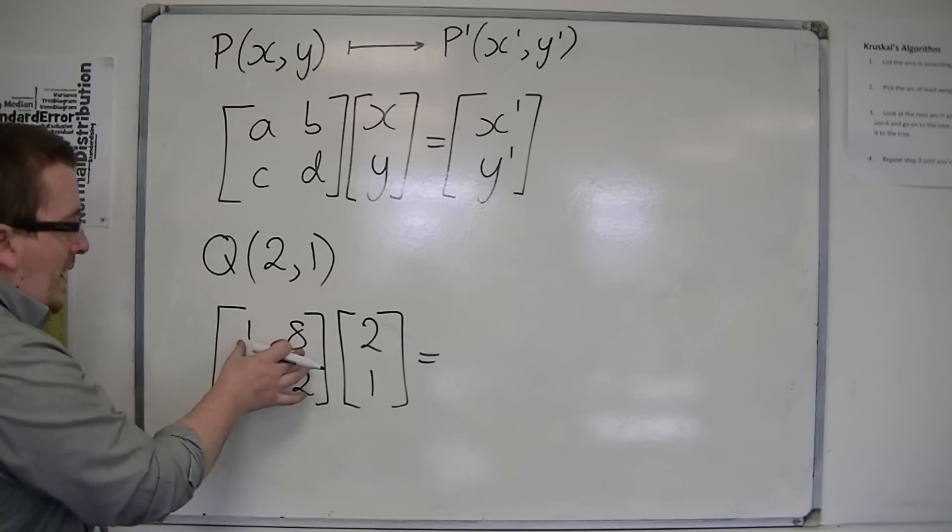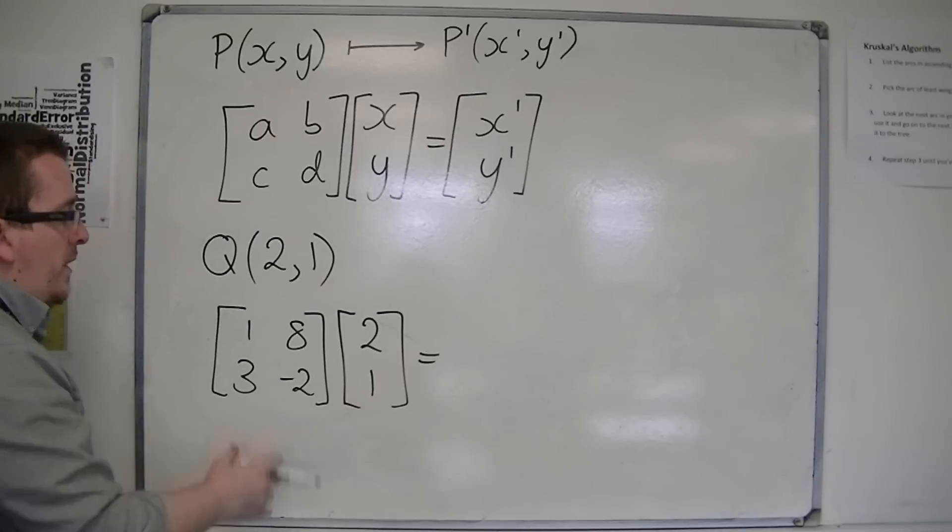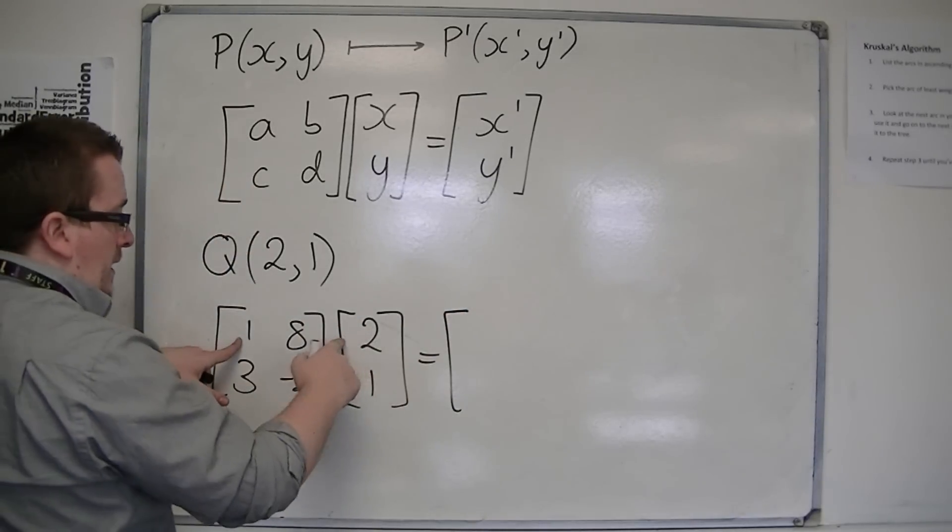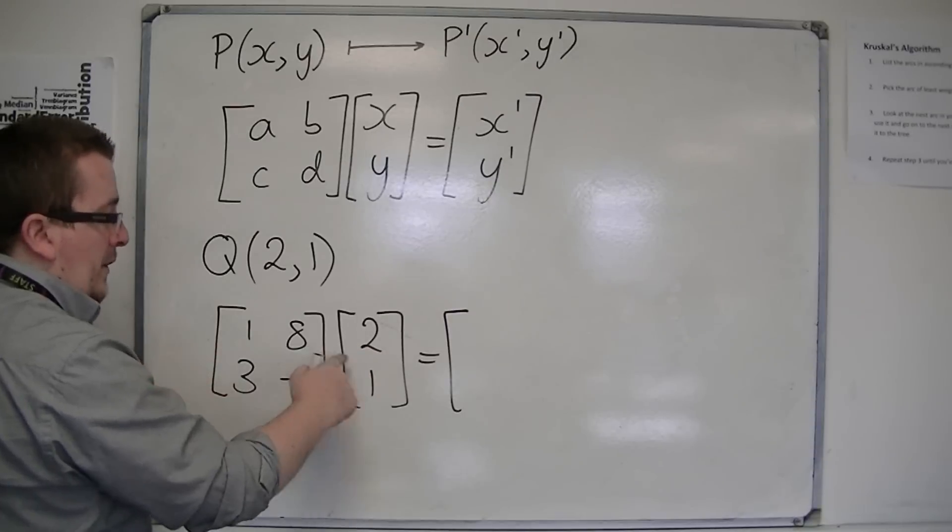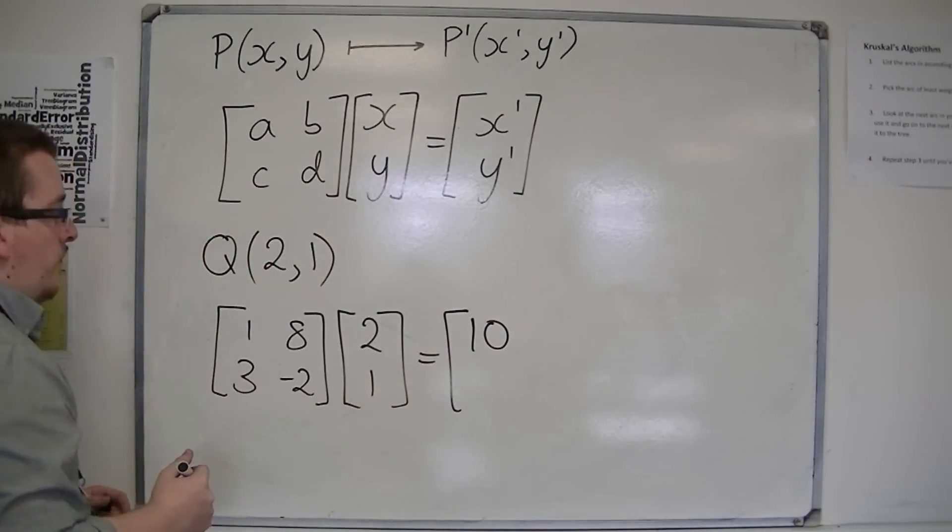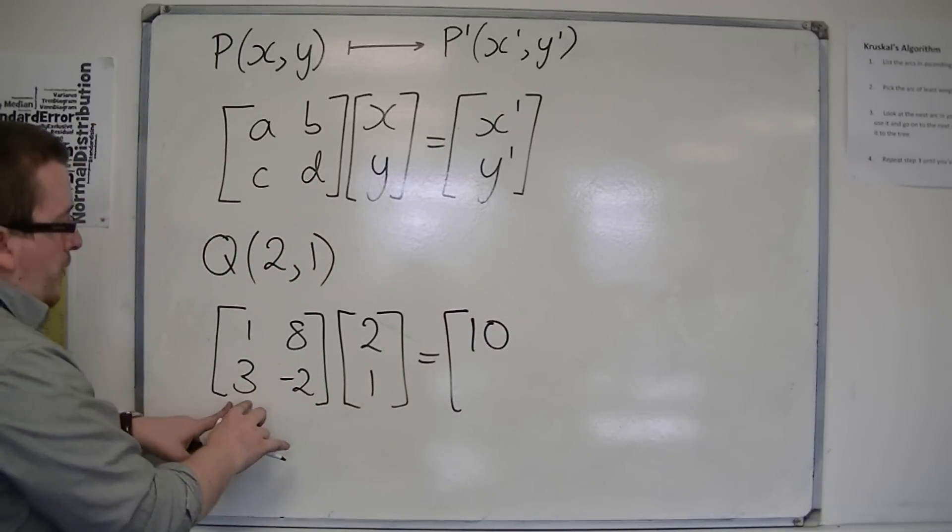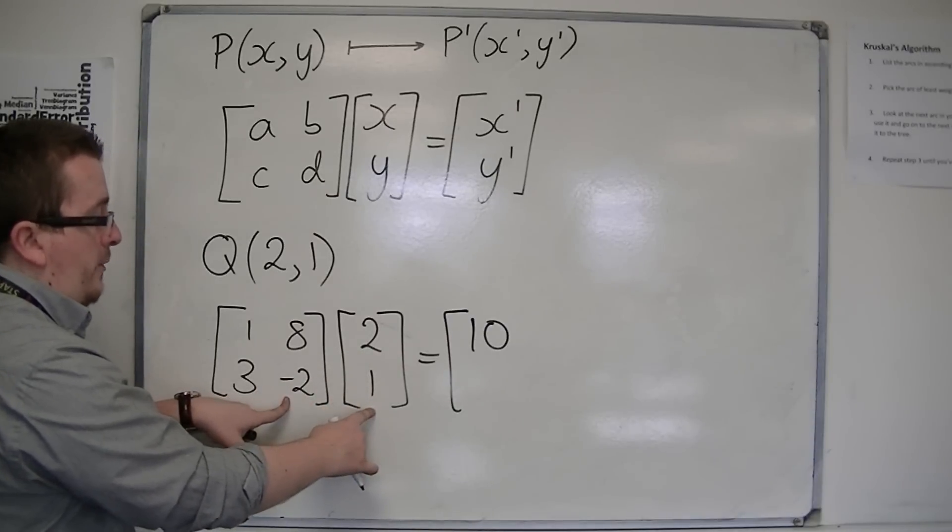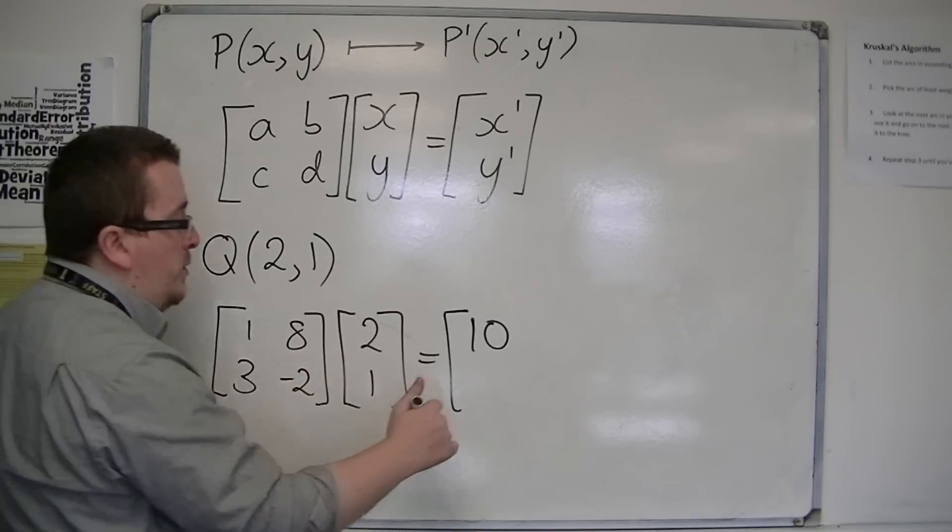So 1, 8 gets multiplied with 2, 1, so 1 times 2 is 2, plus 8 times 1, so I get 10. And then I've got 3 times 2 is 6, and minus 2 times 1 is minus 2, so I've got 6 take away 2, which is 4.